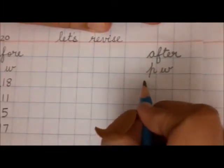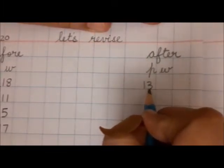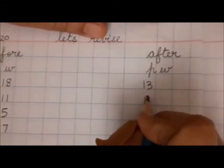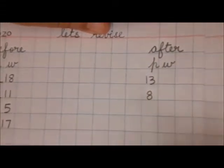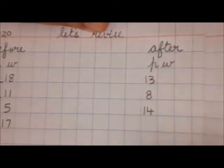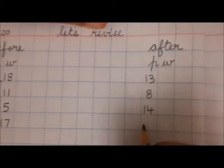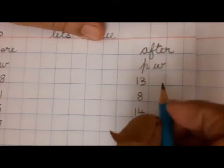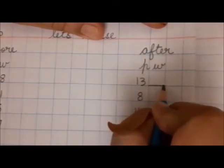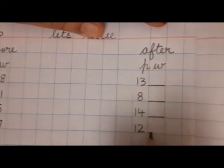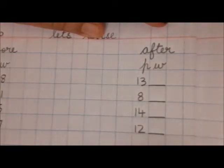Are you ready? Now we will write some numbers below P: 13, 18, 8, 14, and 12. Below W we will put dash, dash, dash, and dash. Easy peasy!